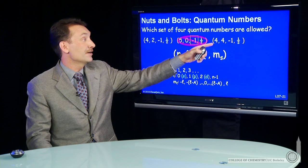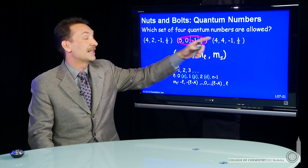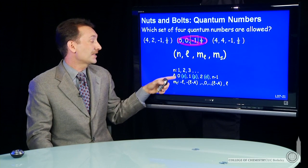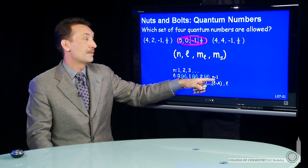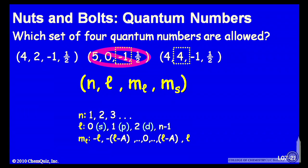This final one here, we have n equal 4. We have l equal 4. Now the maximum value of l is n minus 1. So n and l can never be equal. So that's already a mistake in the quantum numbers. That's not allowed. And this set of quantum numbers is not allowed.